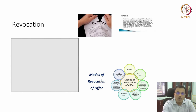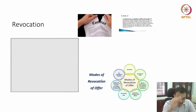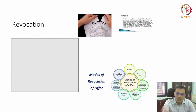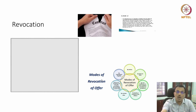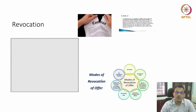So an offer stands valid until any of these things happen: revocation, lapse of time, non-fulfillment of a condition precedent, death or insanity of the offeror, counteroffer, or non-acceptance in the prescribed mode. All of these make the offer invalid, and hence neither acceptance nor a contract can come into place.